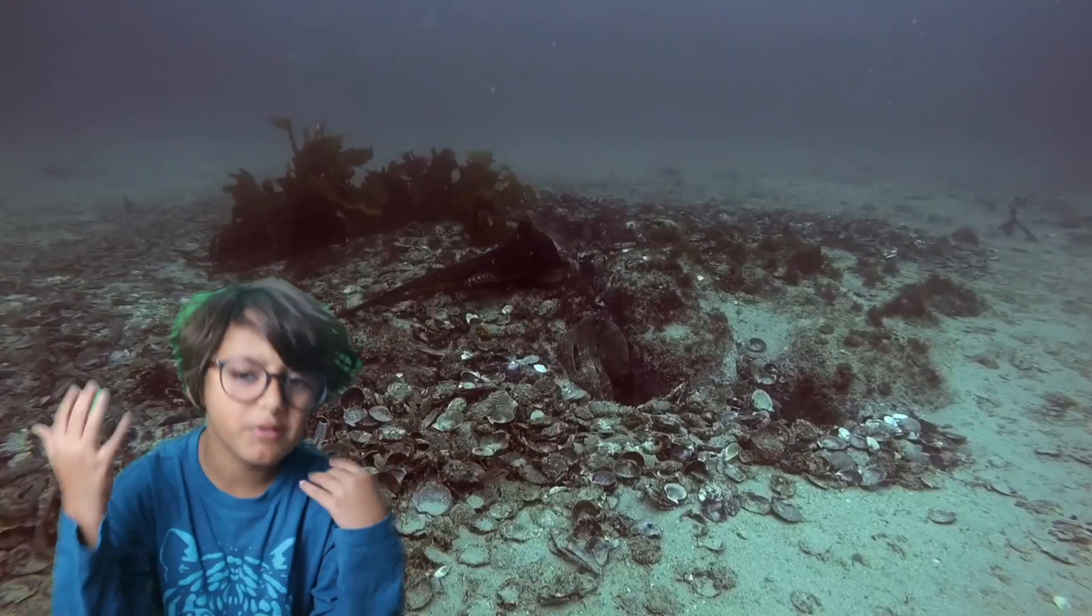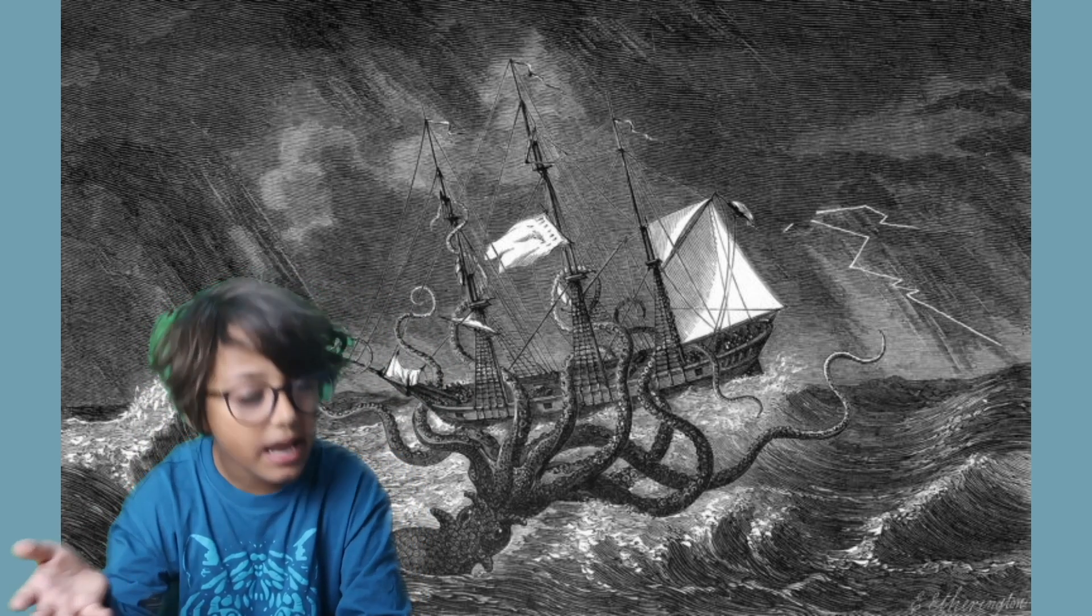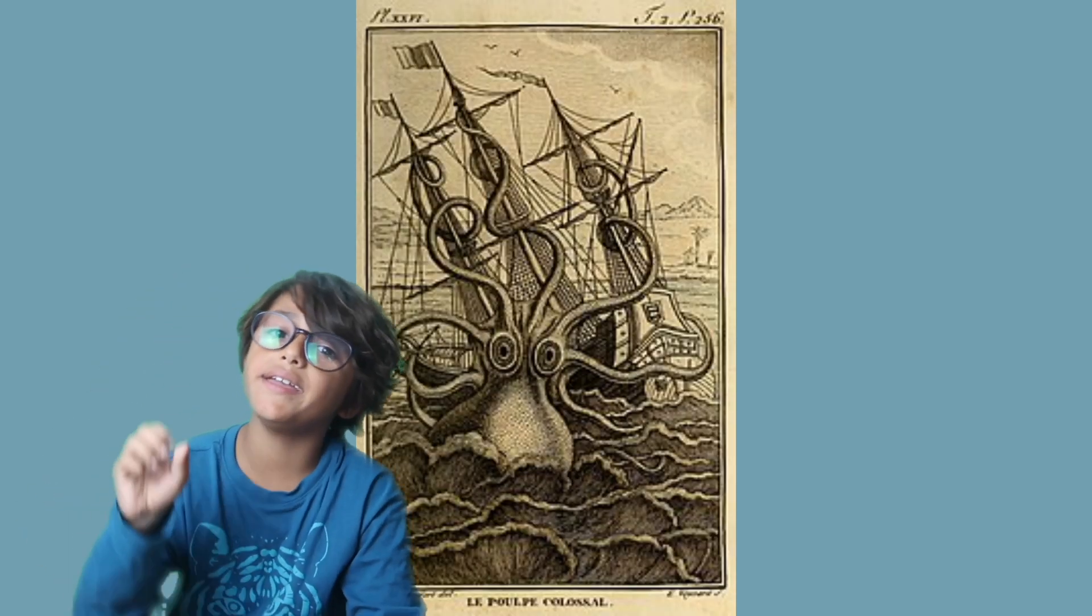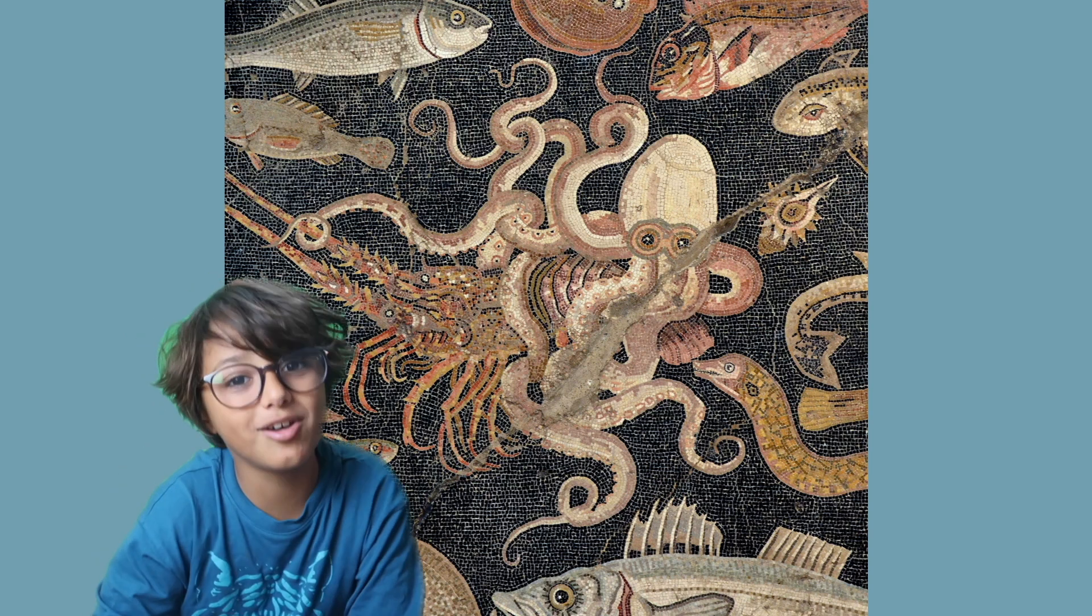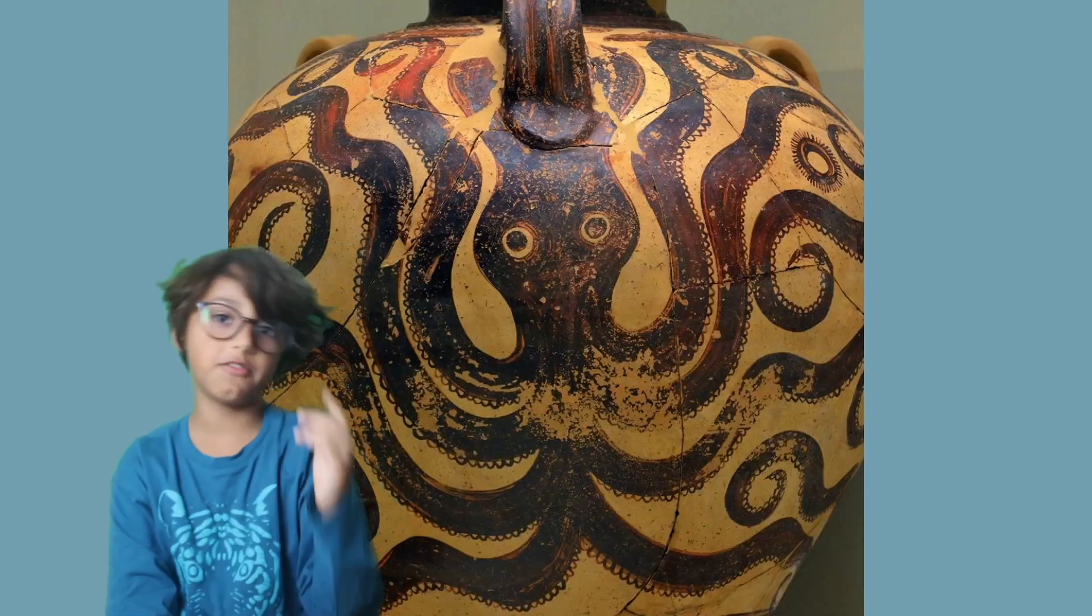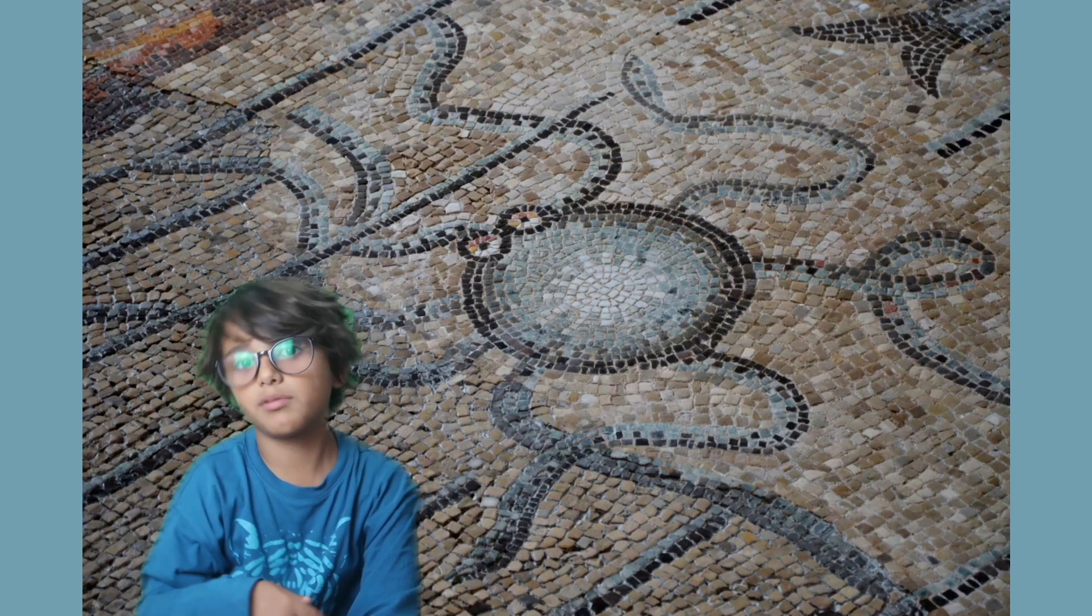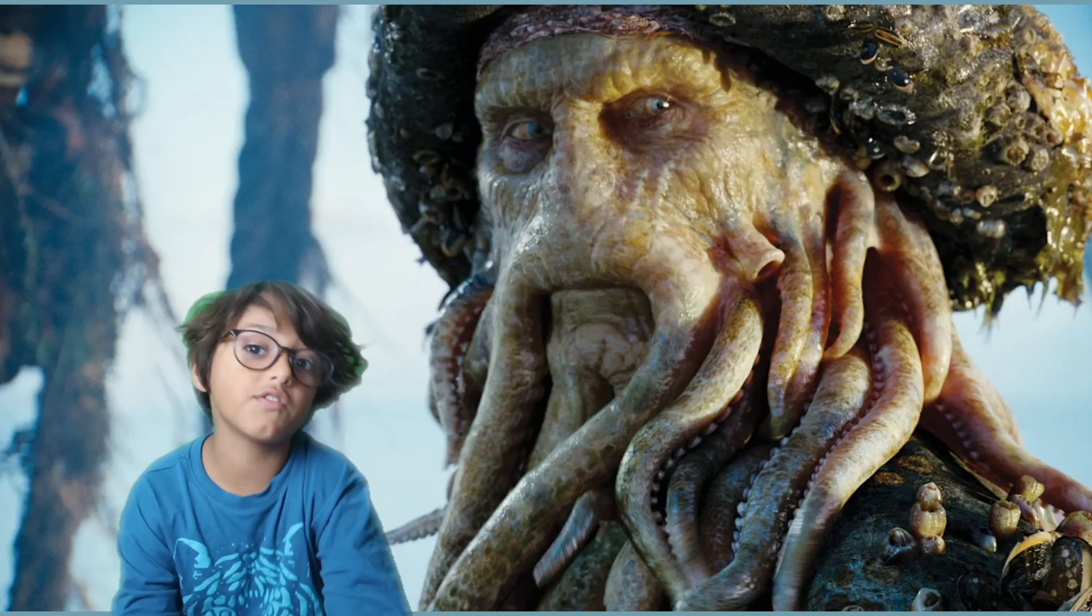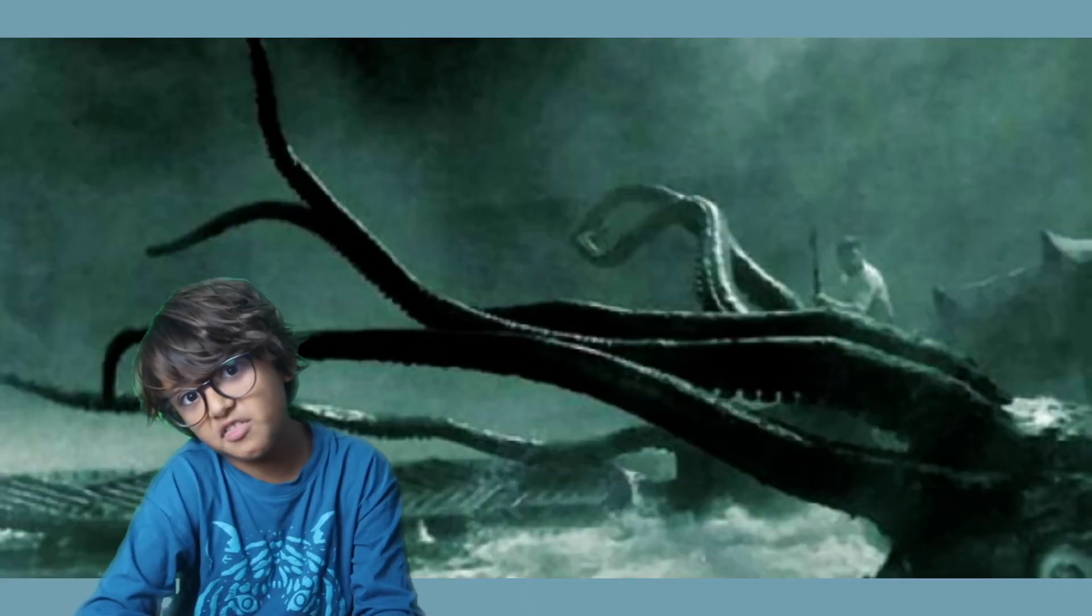Bad stories started very early. So normally octopuses are portrayed as like scary monsters. They are portrayed negatively basically. Books and also films. Octopuses appear in mythology like the Kraken in Norway and Cthulhu, and the Gorgon in the ancient Greece. And if you're wondering what the Gorgon is, it's basically a being that turns stuff into stone. In films there are like the Little Mermaid, the Pirates of the Caribbean, Doctor Octopus, Voyage to the Bottom of the Sea, 20,000 Leagues Under the Sea. And they are all portraying octopuses quite negatively.